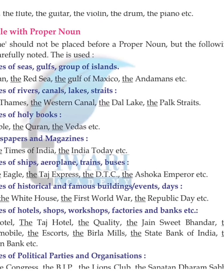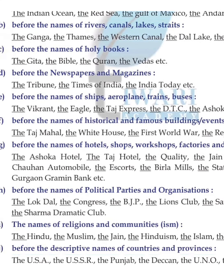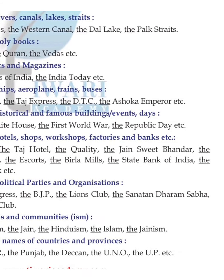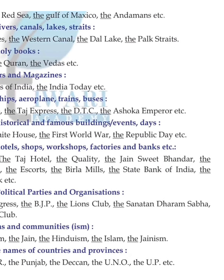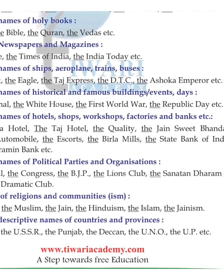'The' is used before names of holy books: the Gita, the Bible, the Quran, the Vedas. Before newspapers and magazines: the Tribune, the Times of India, the India Today. Before names of ships and aeroplanes: the Vikrant, the Eagle, the Taj Express, the DTC. Before names of historical and famous buildings or events: the Taj Mahal, the White House, the First World War, the Republic Day.